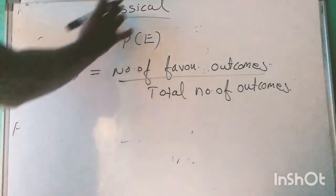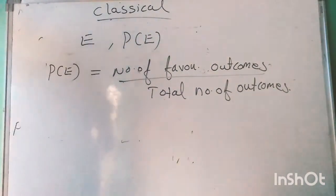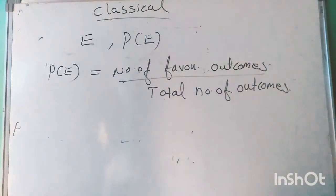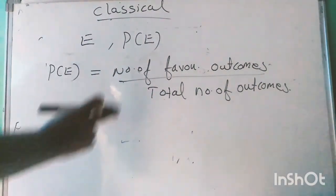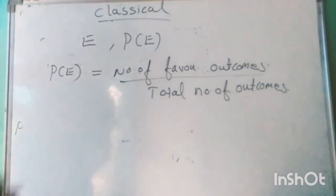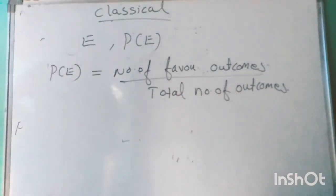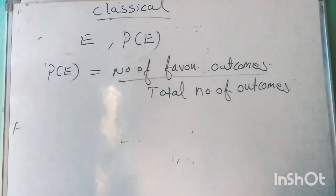So theoretical probability, or classical probability, gives us the formula: P(E) = number of outcomes favourable to E divided by the total number of outcomes.